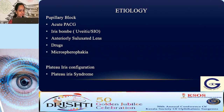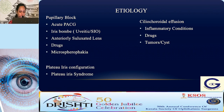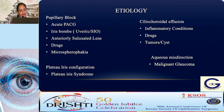Moving on to etiology: pupillary block happens in acute primary angle closure glaucoma, secondary to iris bombé from inflammation, uveitic or silicon oil-filled eyes, anteriorly subluxated lens, drugs causing mydriasis, or microspherophakia. Plateau iris configuration occurs in plateau iris syndrome. Ciliochoroidal effusion happens in inflammatory conditions like VKH or scleritis, or from drugs — topiramate being most common, and even acetazolamide can cause it. Then there are tumour causes and aqueous misdirection.